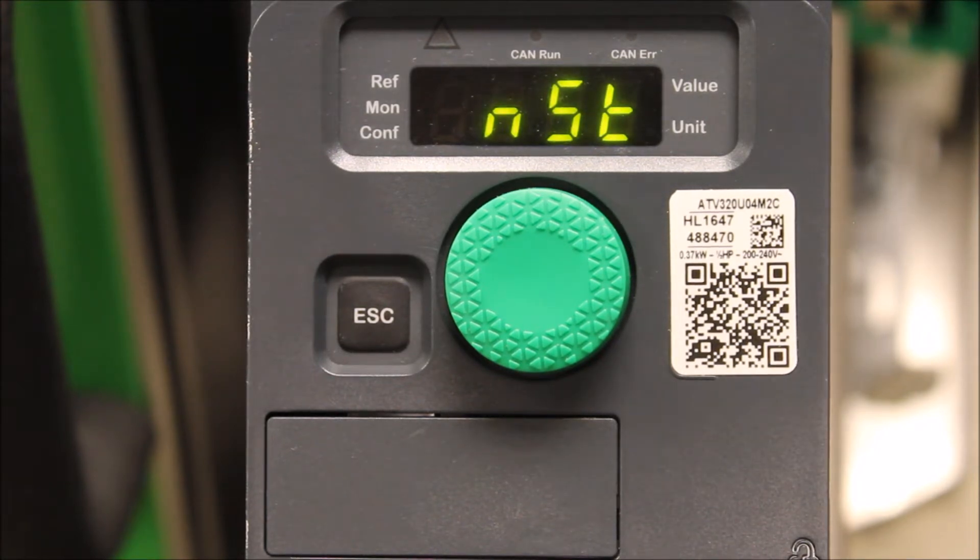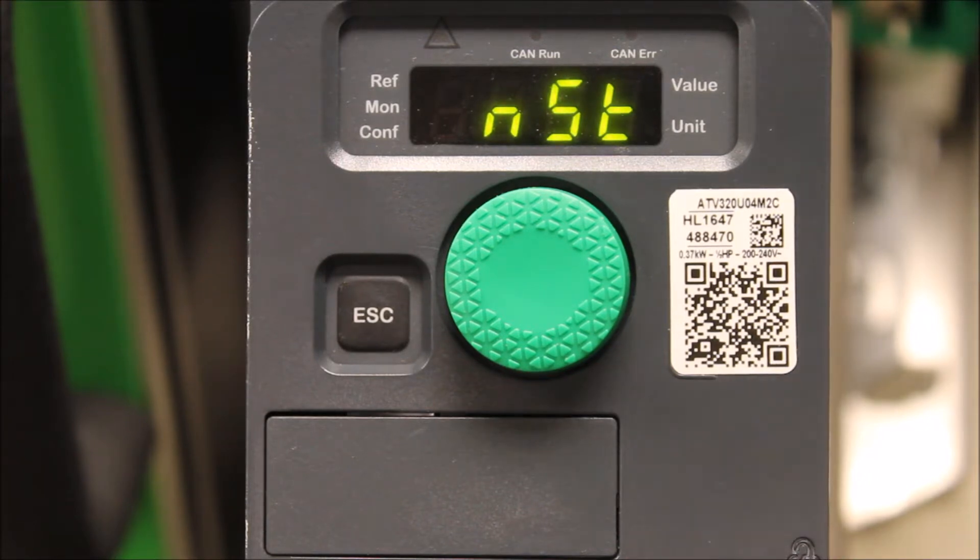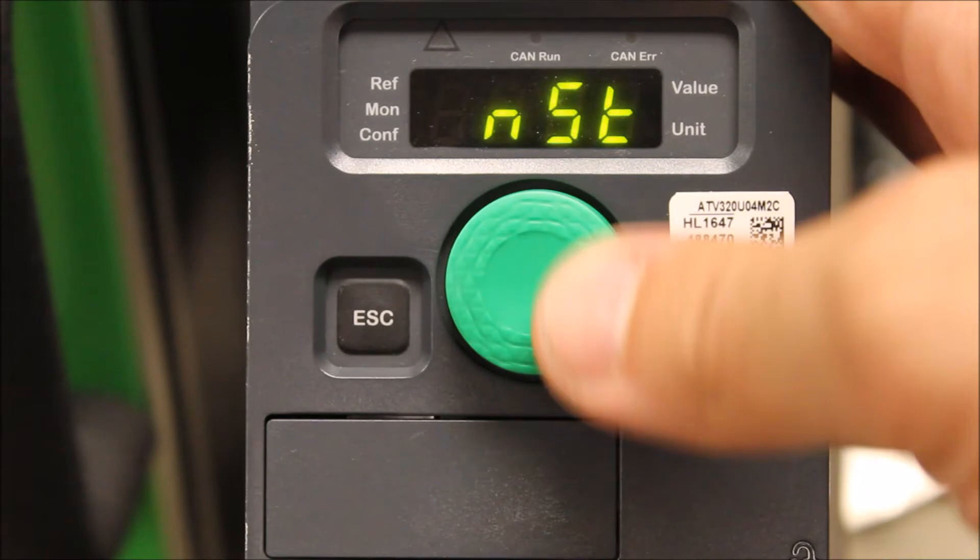The second is using a frequency threshold to toggle those secondary accel and decel times. So let's go ahead and go to that function and talk about it in more detail. From the main